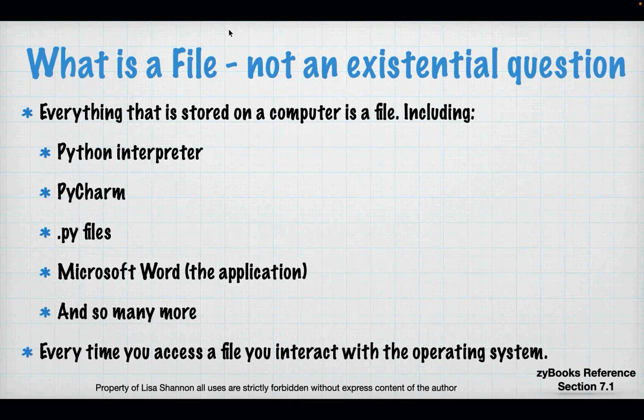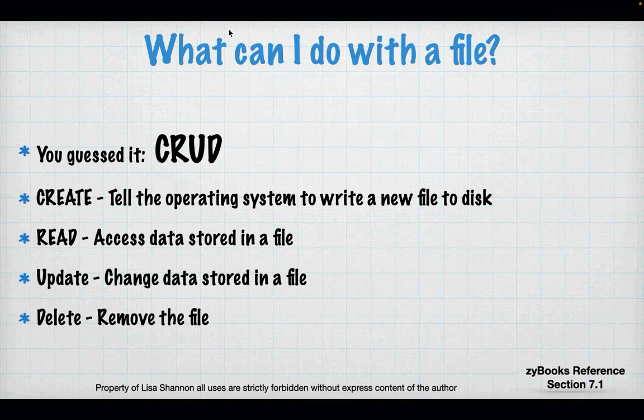Everything is a file on a computer. The operating system is a file. This presentation is a file. Even the executables that run Python are files. Images are files. Everything is a file on a computer. But every time you access a file, you're going to interact with the file system. Things act a little differently for different file systems, and you have to remember that a file is a resource. Opening a file uses a system resource, so that resource has to be returned. What can you do with a file? We all know my love for the term CRUD — create, read, update, and delete.